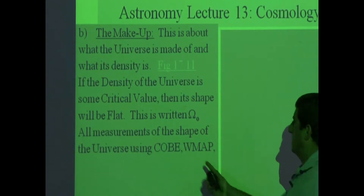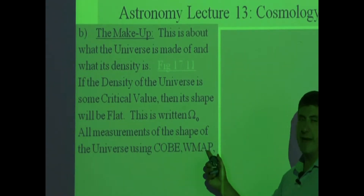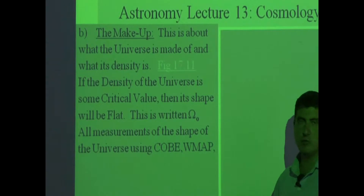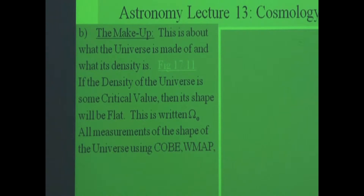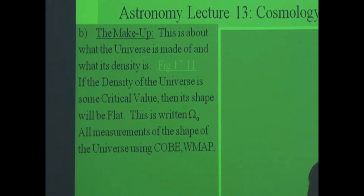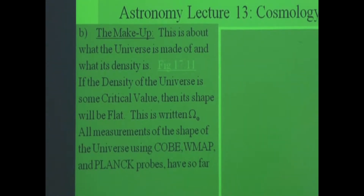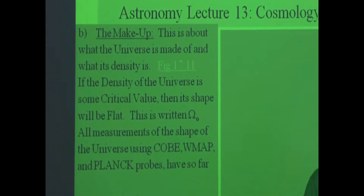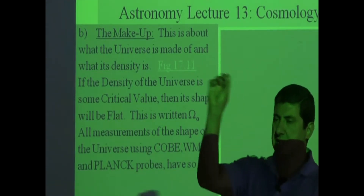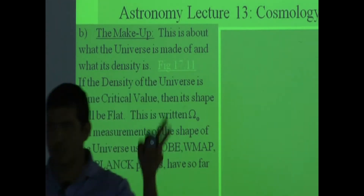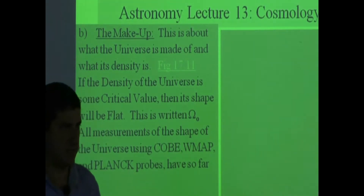After that, another satellite called WMAP was sent out. It operated from roughly 2000 to 2009 or 2010. Then after that, we have another satellite called the Planck satellite, the Planck probe. These three satellites have the main goal of mapping out the cosmic microwave background and determining the size of those hot spots, as well as the structure of the universe and its density.